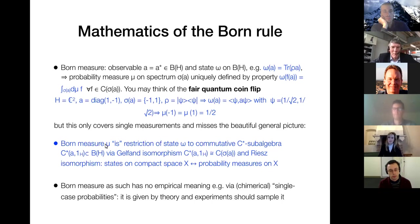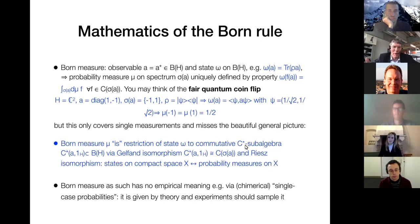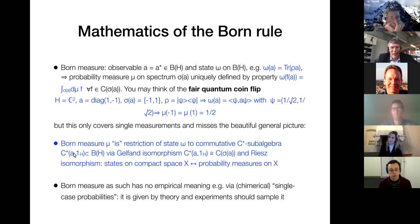If you assume these two identifications, the Born measure simply is the restriction of the state to the algebra generated by A. For me, this view is an example of what I call Bohrification, where everything with empirical significance in quantum theory is formulated in terms of commutative sub-algebras of the algebra of all bounded operators, which is non-commutative. This is a very neat example.